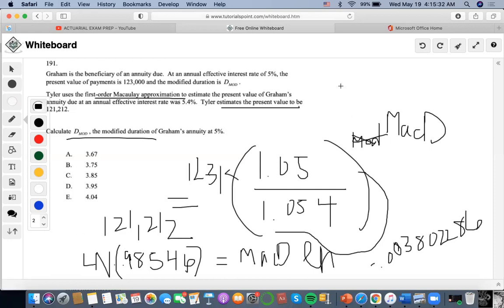Now we want to divide 3.85 by 1.05 to get the mod D. So we'll do and we'll end up getting 3.668, which is closest to answer A.